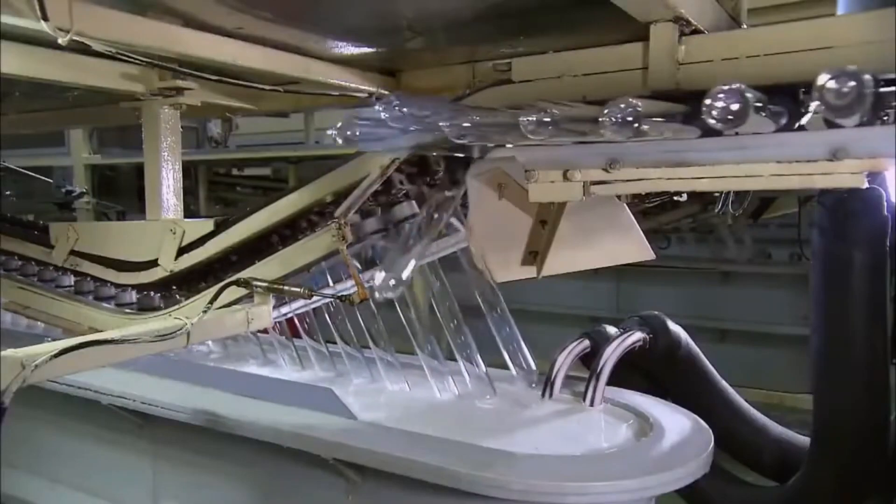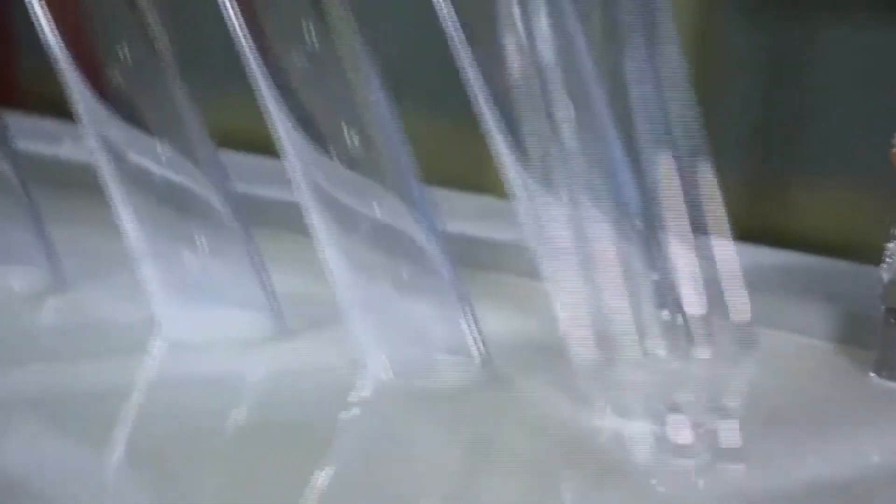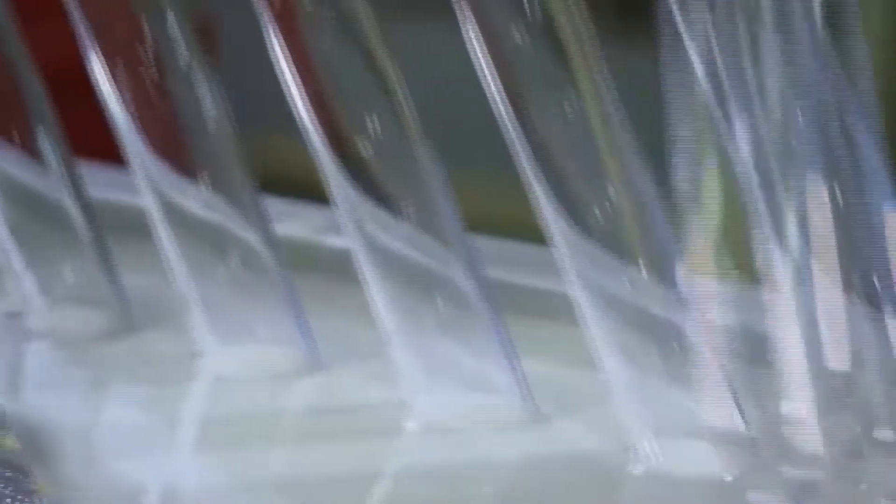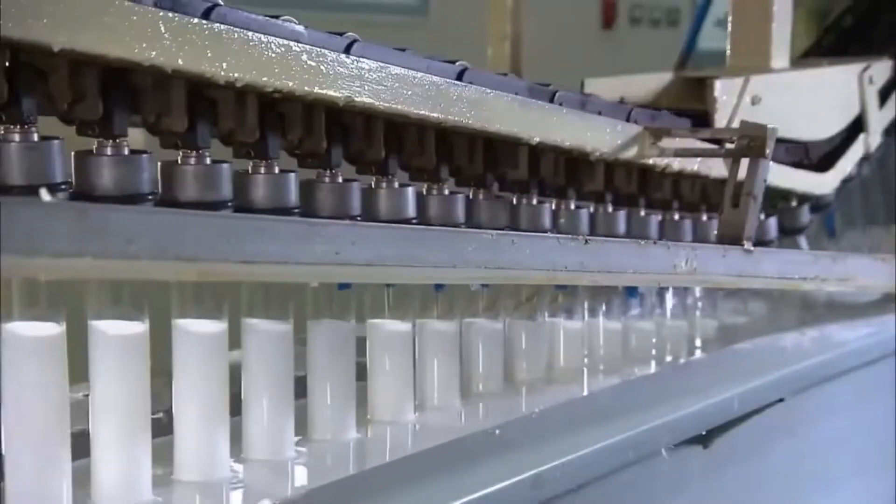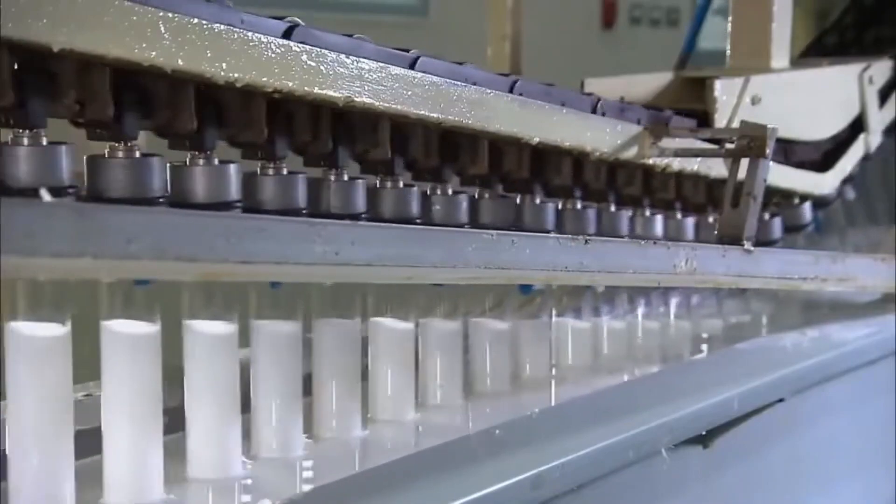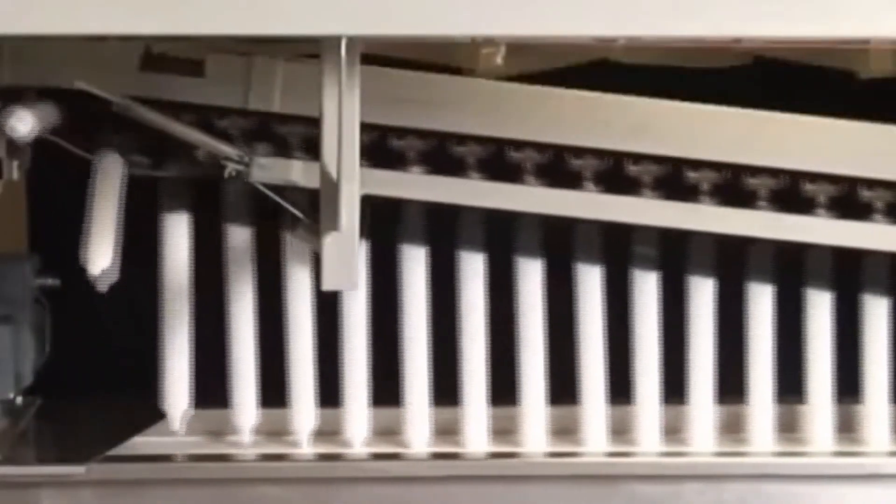Meanwhile, the molds embark on a single-file journey along a computer-operated conveyor belt, making their way for an immersion in the latex solution. The dipping process is deliberate and involves slow rotations, ensuring an even latex coating for a flawless finish.